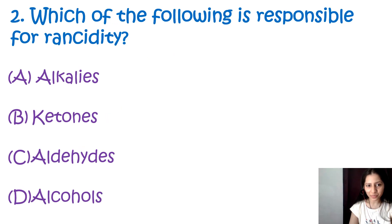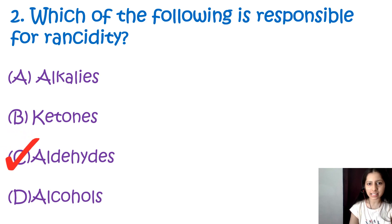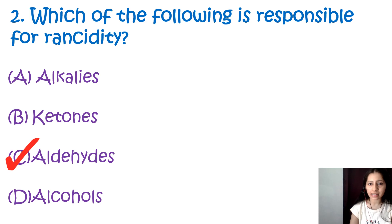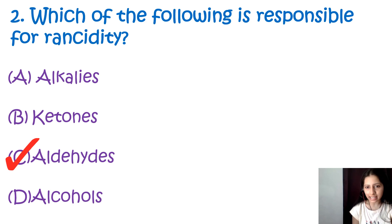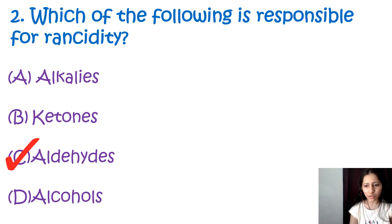Question number 2: Which of the following is responsible for rancidity? Alkalies, ketones, aldehydes, or alcohols. The correct option is C, that is aldehydes. Rancidity occurs due to the oxidation of fats and oils and leads to the formation of off-flavor or odor. Volatile acids or aldehydes are responsible for rancidity due to their offensive odor.